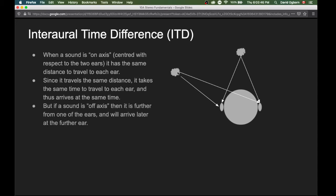But if a sound is off axis, then it's further from one of the ears, as we saw before, and this means that it will arrive later at the further ear.